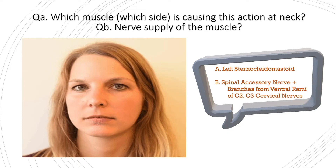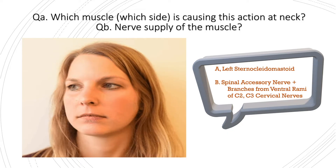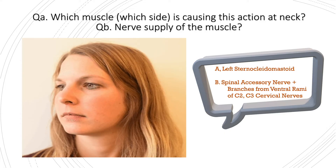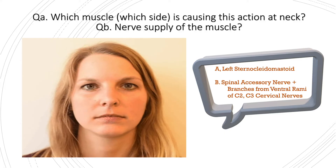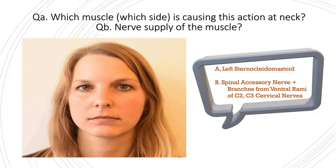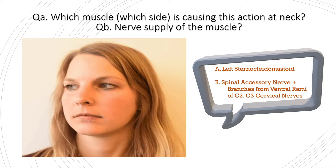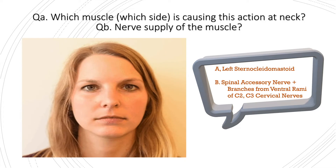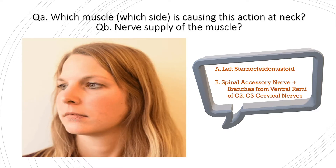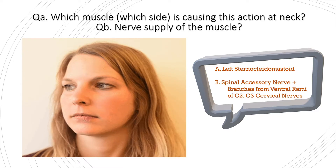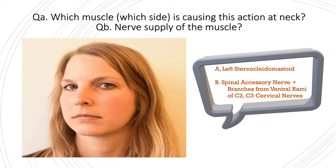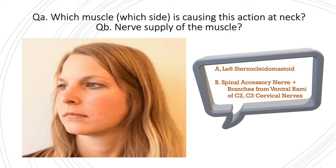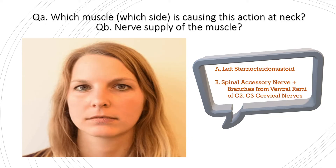The answer is that this muscle is the left sternocleidomastoid. The nerve supply is by the spinal accessory nerve — that is the spinal portion of the 11th cranial nerve. Proprioceptive sensations from this muscle are carried by the ventral rami of C2 and C3 cervical nerves mainly.